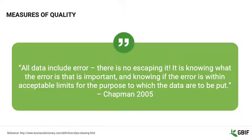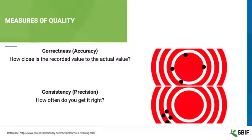While fitness for use is subjective, measures of data quality are much less so. Chapman states that all data include error — there is no escaping it. It is knowing what the error is that is important, and knowing if the error is within acceptable limits for the purpose to which the data are to be put. We can use two measures of quality, correctness and consistency, to help us to document these inherent errors in data.